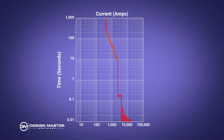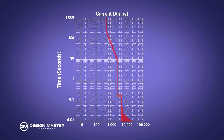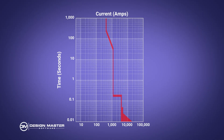Then you have the long time delay — the first sloped section — and depending on the breaker you have options to move this sloped value up and down on the curve. Then you have the short time pickup, the next vertical line, which you can move left and right. After that is the short time delay, a horizontal line after the short time pickup that you can usually move up and down. Depending on the type of breaker, you can also have an I² T curve, which is a sloped line between the short time pickup and short time delay.